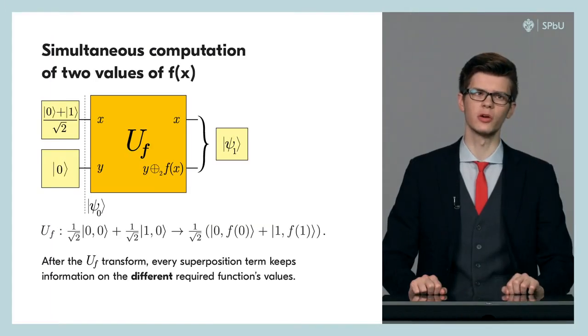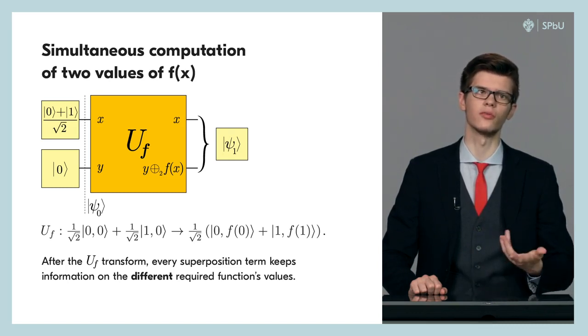As we have already mentioned, quantum parallelism is based on the principle of quantum superposition. Let's consider the following situation. Suppose the state of value register at the output is zero and the data register is the sum of state vectors one and zero multiplied by a normalization factor one over square root of two. Since our computer is two qubit, such a state of the data register corresponds to the sorting of all possible x values of the function f.